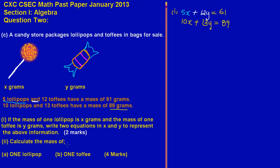In part two they're asking us to calculate the mass of one lollipop (part a) and one toffee (part b) — that's another easy four marks. We have a pair of simultaneous equations, so we're going to solve them to get corresponding values for X and Y.